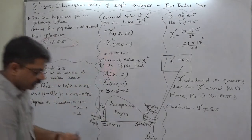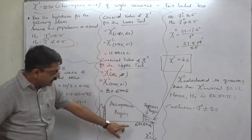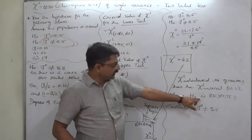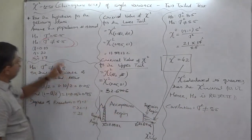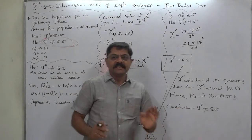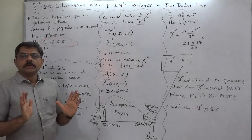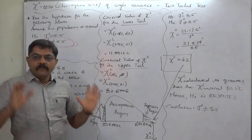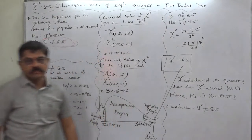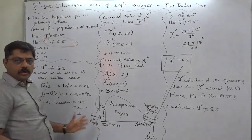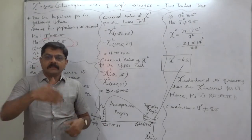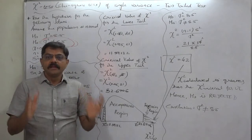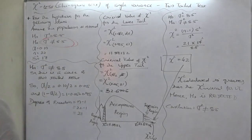Conclusion: since the calculated value of chi-square is greater than the upper tail critical value, the null hypothesis is rejected. Since H₀ is rejected, the alternative hypothesis becomes our conclusion — that is, the population variance is not 8.5. I hope you understand the concept of the two-tailed chi-square test. Learn everything about the two-tailed chi-square test from this lecture. In this series we will also discuss more cases on the two-tailed chi-square test. Thank you very much.